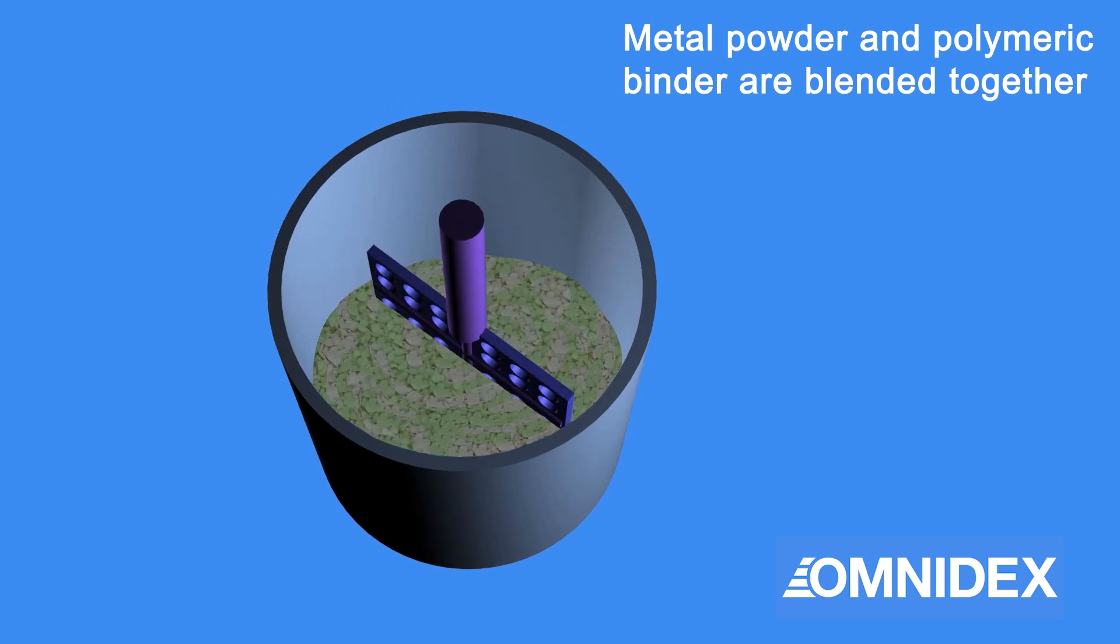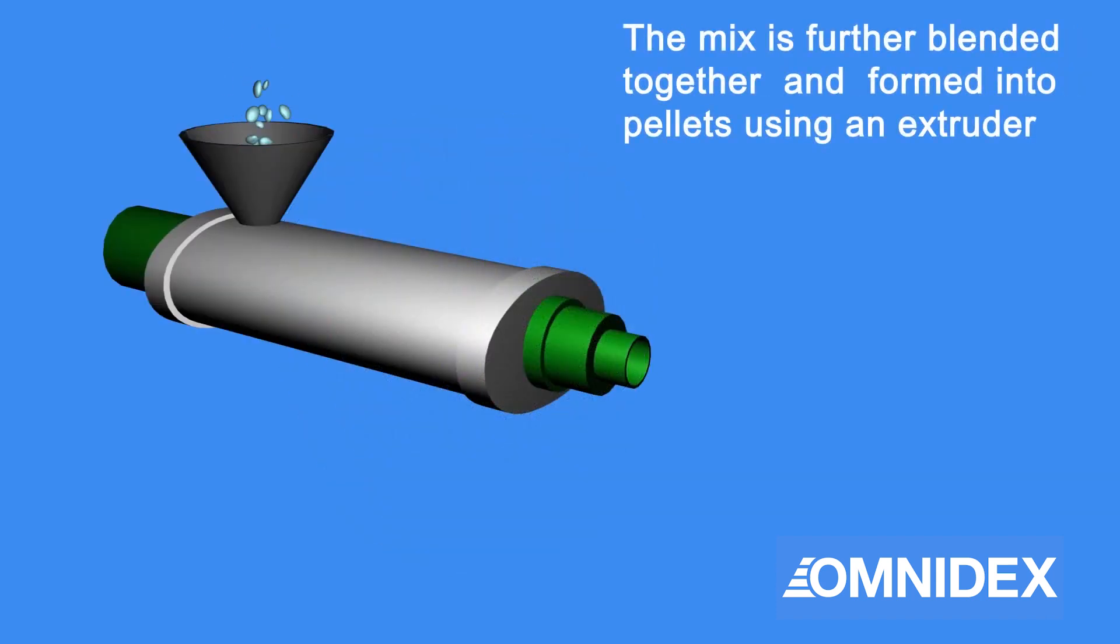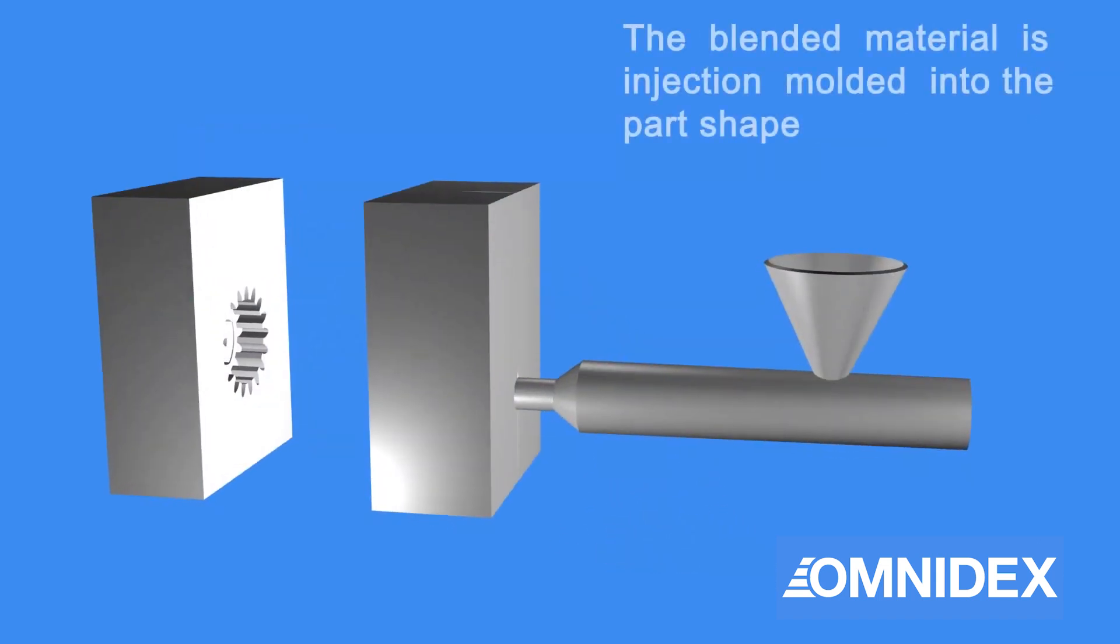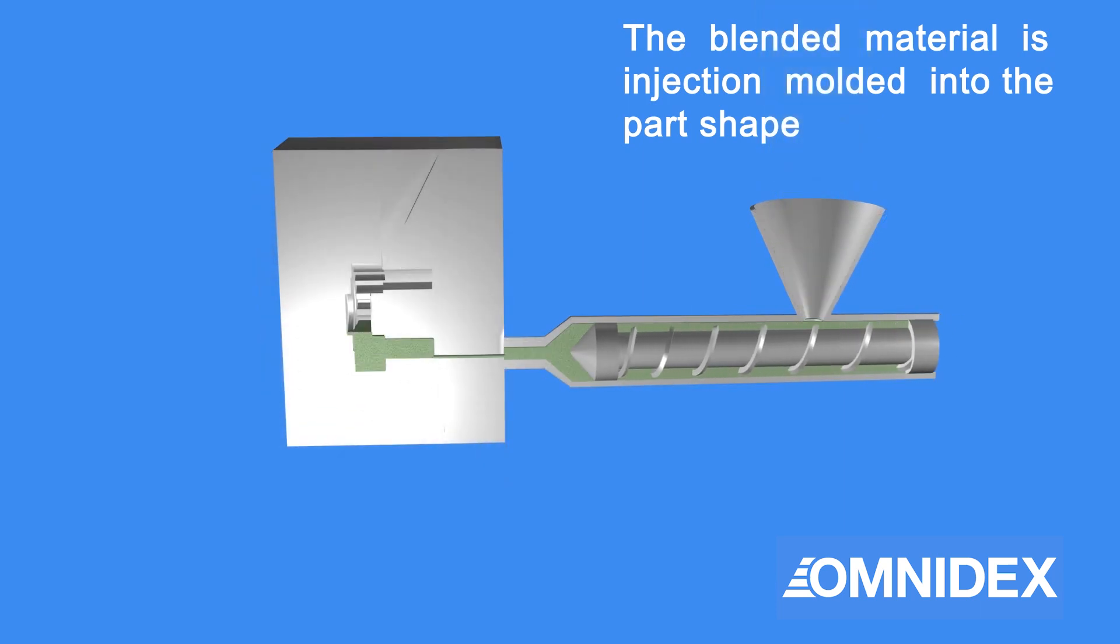Metal powder and polymeric binder are first blended together. The mix is then fed into an extruder and further blended to form into pellets. Next, the blended material is injected into a mold to form the parts.